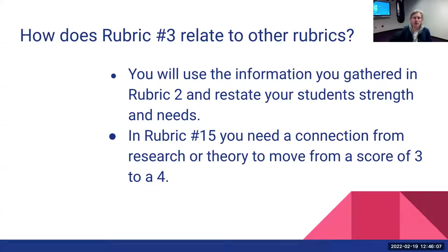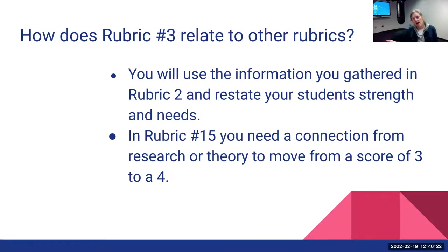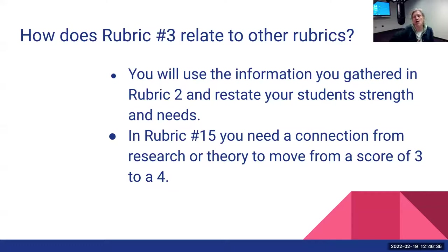And then in rubric 15, you're going to need to make a connection from research or theory to move your student forward on the items that they should do next, which would get you from a score of three to four. So this work in rubric three is a preliminary to that task three end rubric, where you'll think about whether it's a need that was only partially achieved or could go a little further, and you'll probably draw on this research there. Your work here will give you at least double duty.